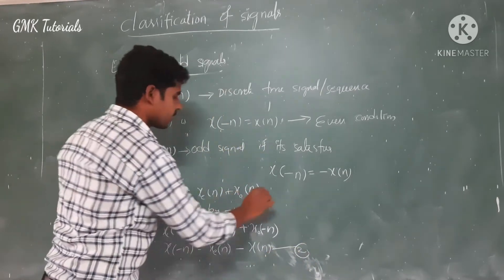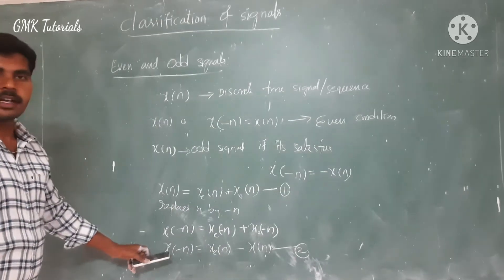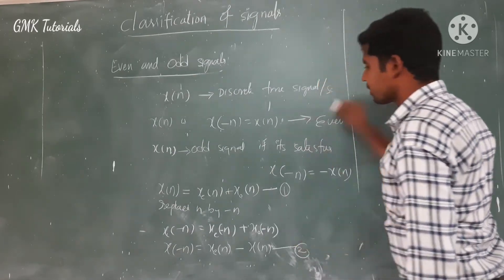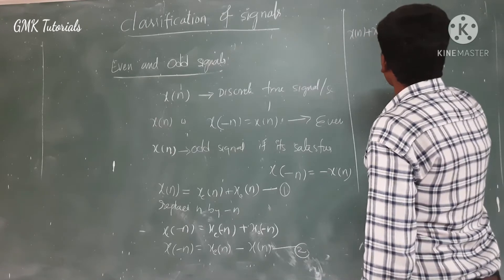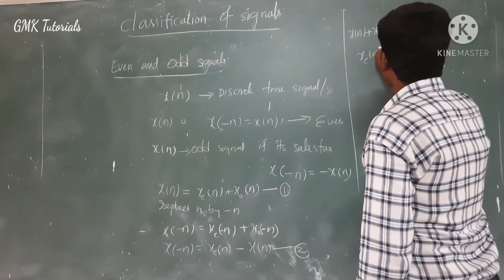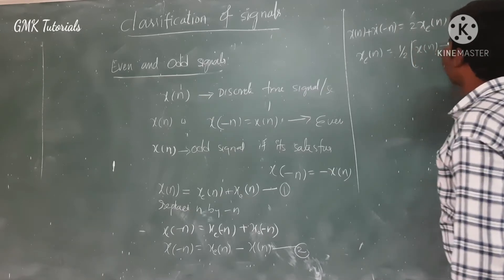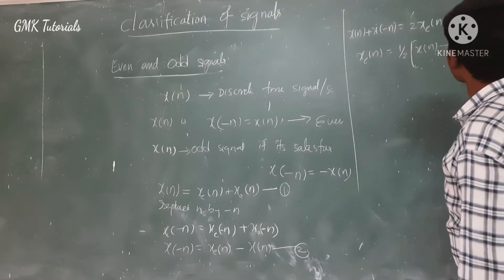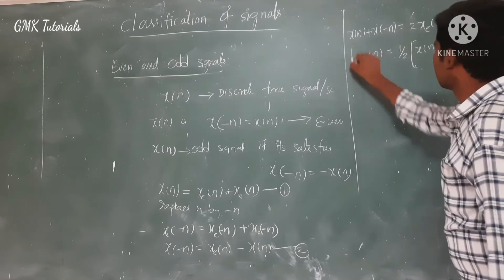For the odd component, x_o of minus n equals minus x_o of n. Now by adding equation number 1 and equation number 2, we get x of n plus x of minus n equals 2 times x_e of n. Therefore x_e of n is equal to one half of x of n plus x of minus n.